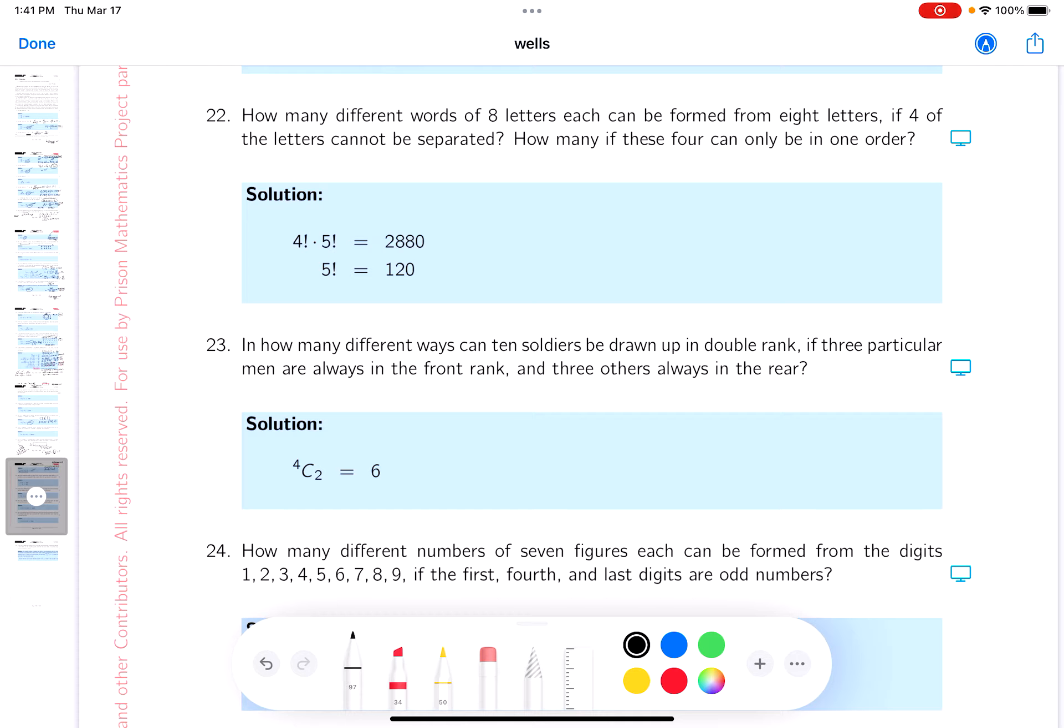They have eight letters. They're going to create a word with eight letters. And again, a word doesn't have to be in a dictionary, just to be a sequence of letters. So there'll be eight letters can be formed from eight letters. We have eight letters.